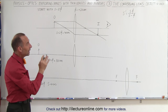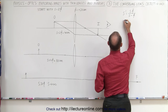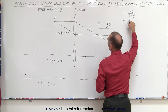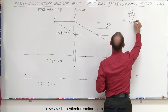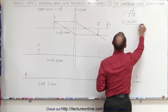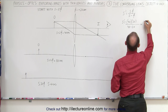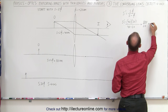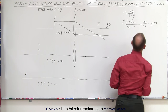Now let's calculate the image distance using our equation. S' is equal to S — which is 2 times the focal length, 40 centimeters — multiplied by the focal length, 20 centimeters, divided by 40 minus 20. This is equal to 800 divided by 20, which equals positive 40 centimeters.